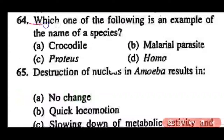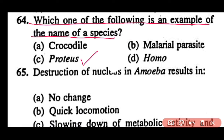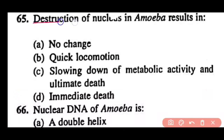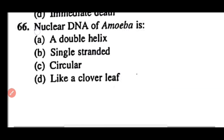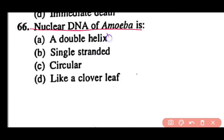Question 64: Which is an example of a species name — Crocodile, malarial parasite, Proteus, or Homo? Correct answer is option C. Proteus is the species of Amoeba, commonly known as Amoeba proteus. Question 65: Destruction of the nucleus in Amoeba results in no change, quick locomotion, slowing down of metabolic activity and ultimate death, or immediate death? Correct answer is option C. There is slowing down of metabolic activity and finally death occurs. Question 66: The nuclear DNA of Amoeba is double helix (option A).